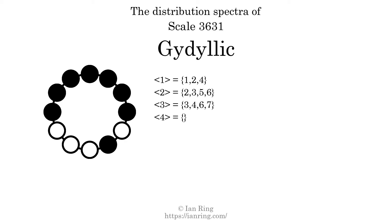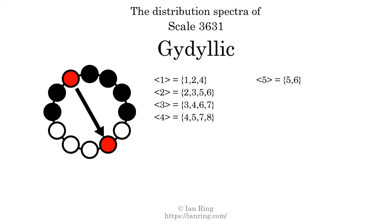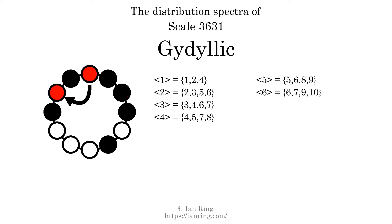The generic interval of 4 scale steps comes in 4 different specific interval sizes: 4, 5, 7, and 8 semitones. The spectrum width is 4. The generic interval of 5 scale steps comes in 4 sizes: 5, 6, 8, and 9 semitones. The spectrum width is 4. The generic interval of 6 scale steps comes in 4 sizes: 6, 7, 9, and 10 semitones. The spectrum width is 4.